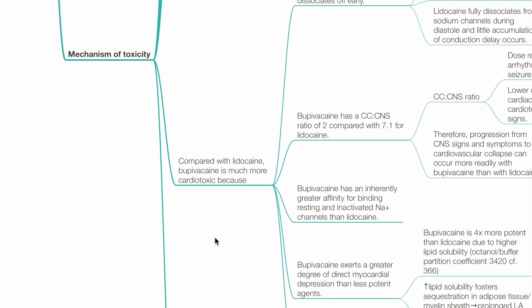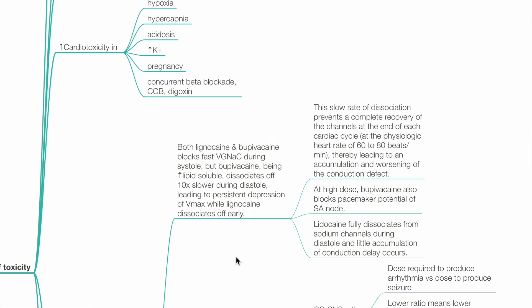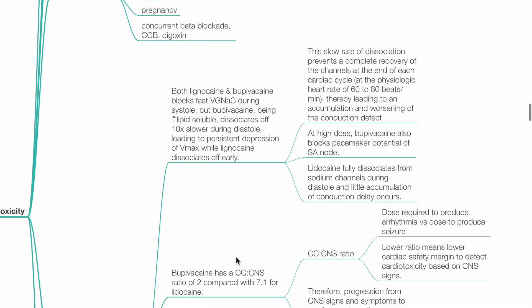Compared with lidocaine, bupivacaine is more cardiotoxic because, being more lipid soluble, it dissociates off 10 times slower during diastole from voltage-gated sodium channels compared to lidocaine. This leads to persistent depression of Vmax, while lidocaine dissociates off early. At high dose, bupivacaine also blocks the pacemaker potential of the SA node.